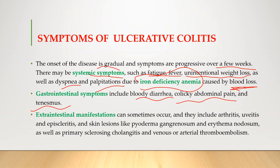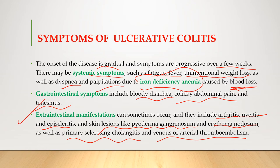Extra-intestinal manifestations are similar to Crohn's disease and include arthritis, uveitis, episcleritis, skin lesions like pyoderma gangrenosum and erythema nodosum, as well as primary sclerosing cholangitis and venous or arterial thromboembolism.